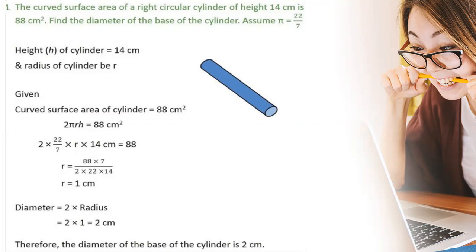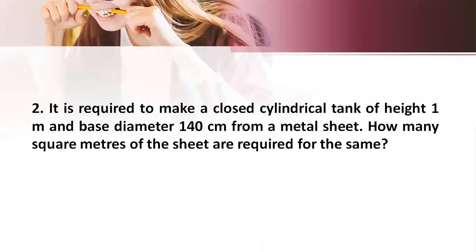Given the curved surface area of the cylinder is equal to 88 cm², that is 2πrh = 88 cm². Now substituting the values of π as 22/7 and h as 14 cm, if we solve the problem we get r = 1 cm. Now we need to find the value of the diameter, which is twice the radius. Therefore diameter = 2 × 1 = 2 cm. Therefore the diameter of the base of the cylinder is 2 cm.